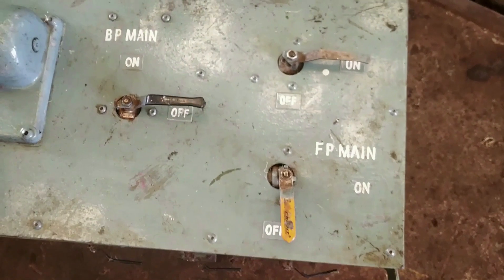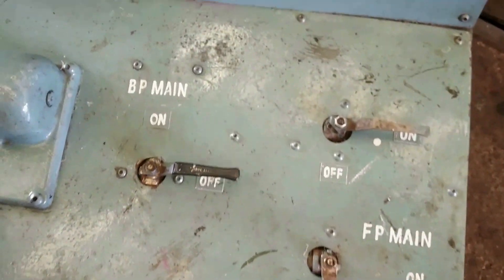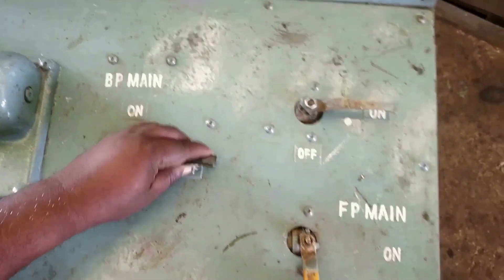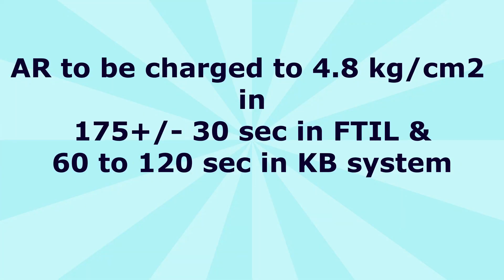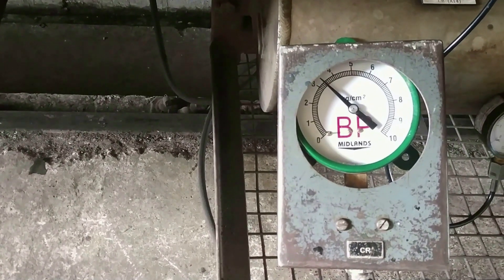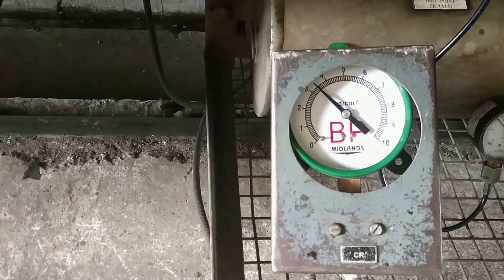Open the air supply. The car is to be charged to 4.8 kg per cm² within 175 plus or minus 30 seconds in FTL system, and 60 to 120 seconds in KB system.